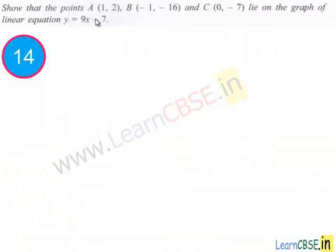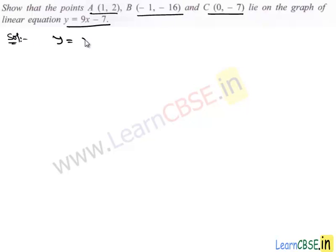Let's move to the next question. In this question, we have to show that the points A, B, C lie on the graph of the linear equation y = 9x - 7. So let's work out the problem. Here we take the given equation y = 9x - 7, and we are given the three points. First of all,